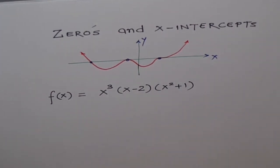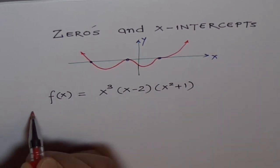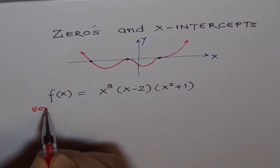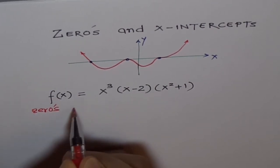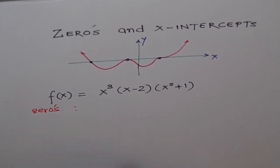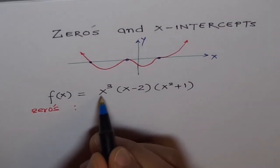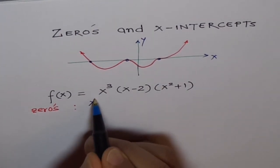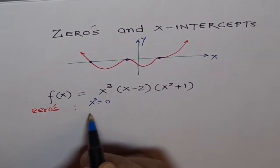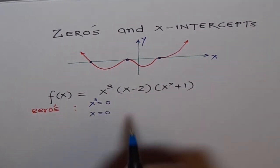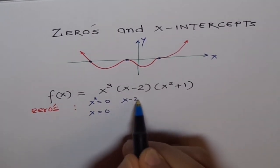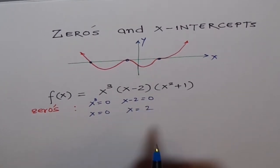Now, how will you find zeros of this function? So first thing, let's try to calculate zeros of this function. Zeros, you have to equate each factor to zero and figure it out. X³ equals zero, so X equals zero. Here X-2 equals zero, that means X equals 2.